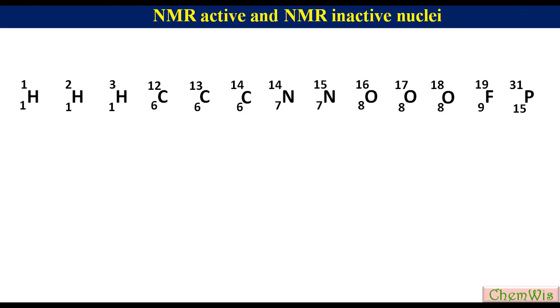If we take three isotopes of hydrogen, they all have odd atomic number. Since we have learned that for NMR activity, out of Z and A at least one should be odd, we need not see the mass number. All three isotopes of hydrogen will be NMR active.